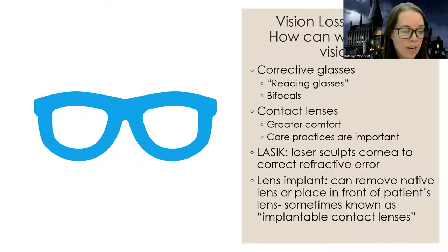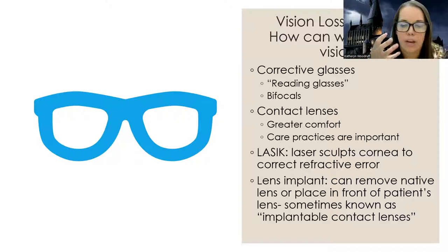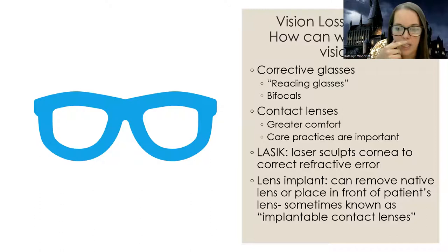Some people are even having what's called lens transplants — taking out the person's own lens and placing a new one in front of it. They're calling it an implantable contact lens; they're taking the patient's own lens and placing a new one in front of it. It's like having a permanent contact lens you never take out.